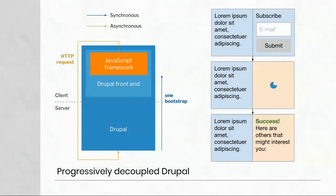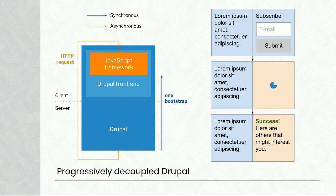You've probably heard the term progressively decoupled Drupal, which involves an interpolation of a JavaScript framework inside the Drupal front end. In this case, Drupal still controls the entirety of the front end — but from the point that Drupal flushes markup out to the browser, the framework takes over from there. It's a different kind of handoff.